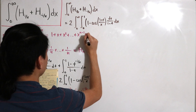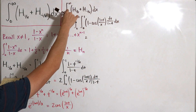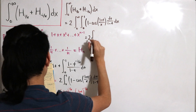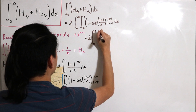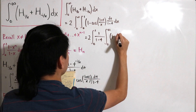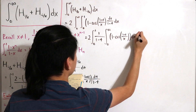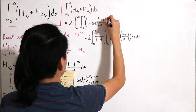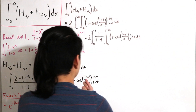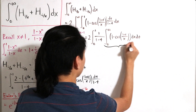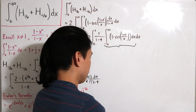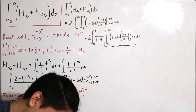We change the order of integration, placing the t integral on the outside. This gives 2 · ∫₀¹ [1/(1 − t)] · ∫₀^∞ [1 − cos(ln(t)/x)] dx dt. We now want to solve the inner integral with respect to x, which requires defining a generalization.